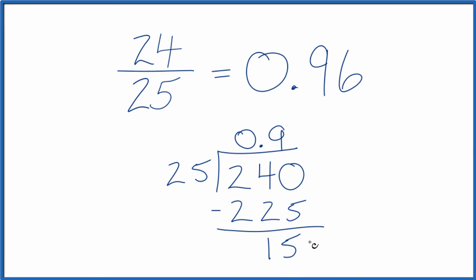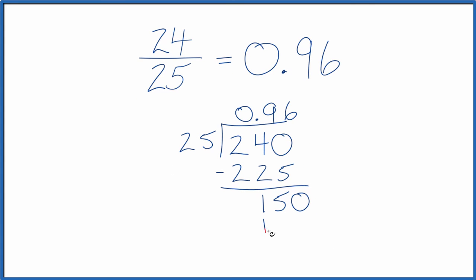So 25 doesn't go into 15. If we call it 150, move over 1. 6 times 25, that's 150. We subtract, remainder is 0. So 24 divided by 25 is 0.96.